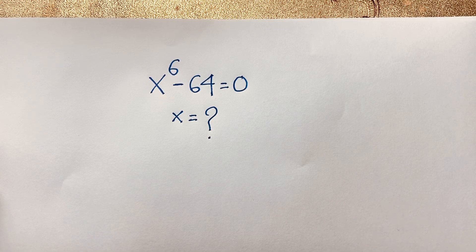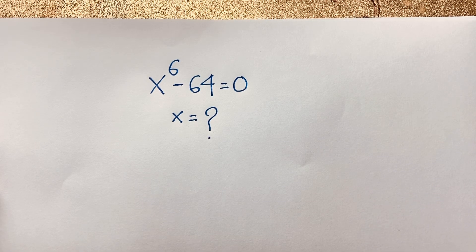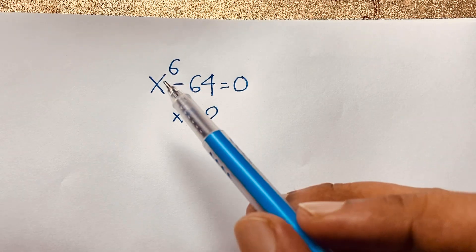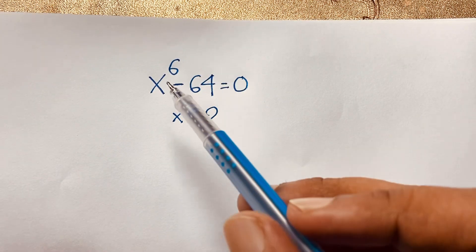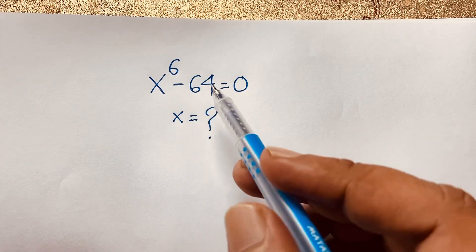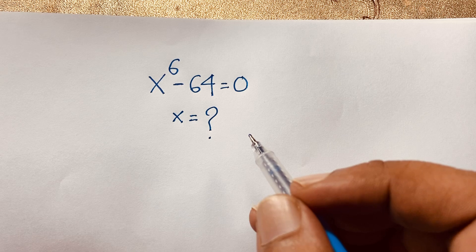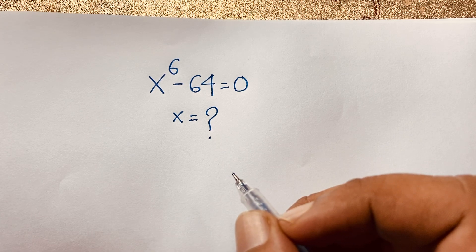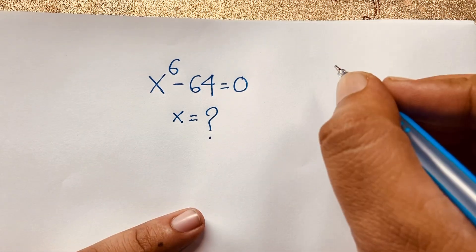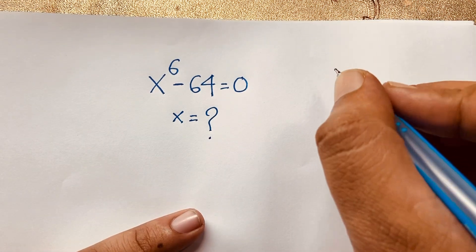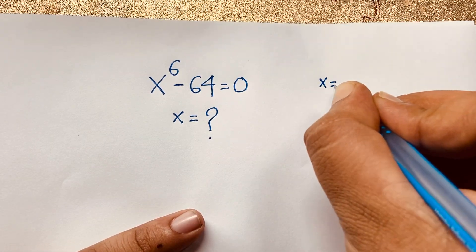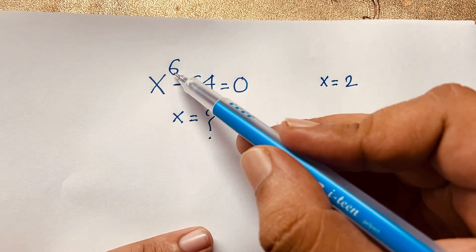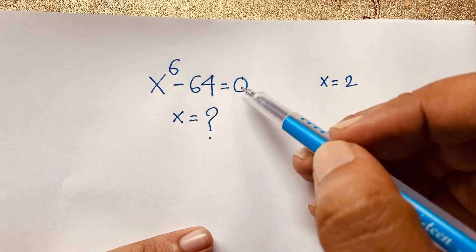Hello everyone. In this video we have solved a nice German math olympiad question: x to the power 6 minus 64 is equal to 0. What is x? How to solve this exponential math problem? First of all, if you think x is equal to 2, you can easily verify: 2 to the power 6 is 64, and 64 minus 64 is 0.